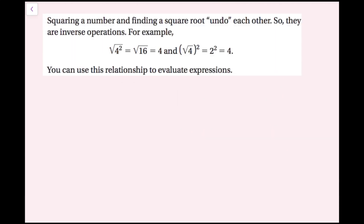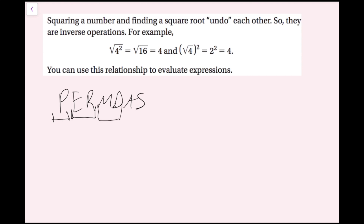Squaring a number and finding a square root undo each other — they are inverse operations. For example, the square root of 4 squared equals 16, which equals 4. And the square root of 4, quantity squared, is 2 squared, which is 4. You can use this relationship to evaluate expressions. We do square roots in the same step as exponents in our order of operations. We can now think of PEMDAS as PERMDAS: Parentheses, Exponents and Radicals, Multiplication and Division, then Addition and Subtraction.